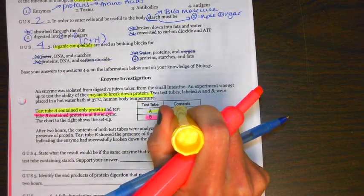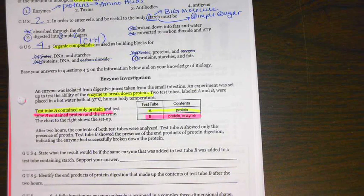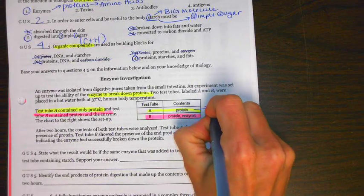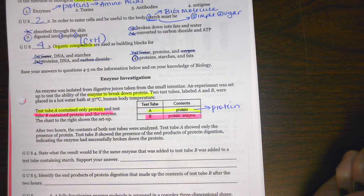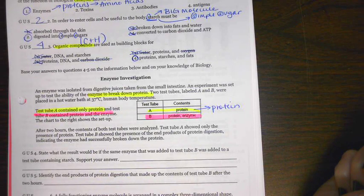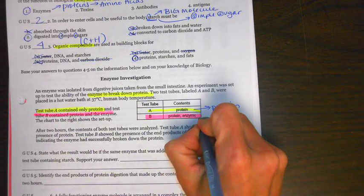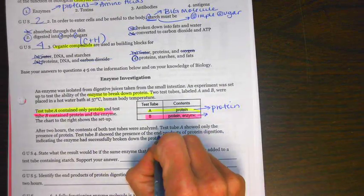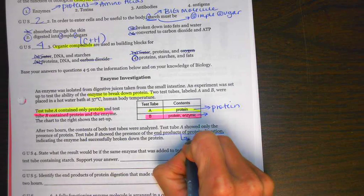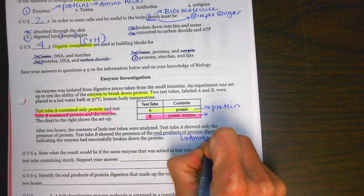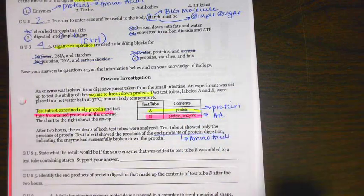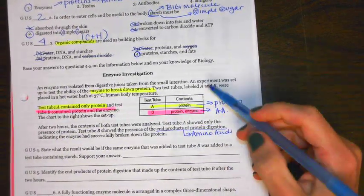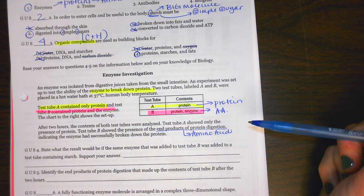Test tube A contained only the protein. Test tube B contained the protein and the enzyme. The chart shows that setup. After two hours, the contents of both test tubes were analyzed. Test tube A showed only the presence of protein. After two hours, test tube B showed the presence of the end products of protein digestion, indicating the enzyme had been successful. Remember, the end products of protein digestion are the building blocks of a protein, which are going to be amino acids.